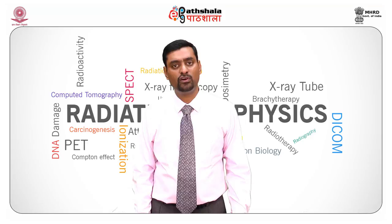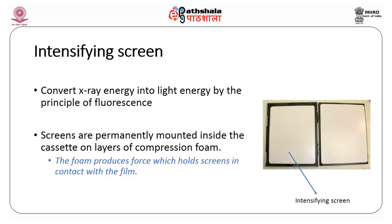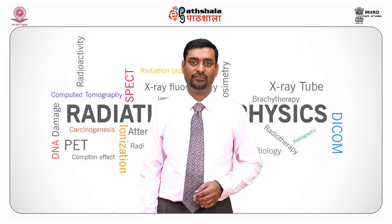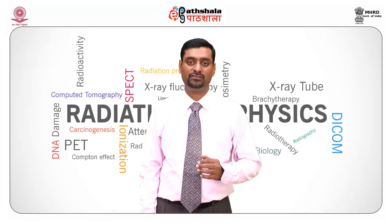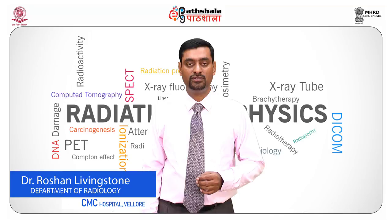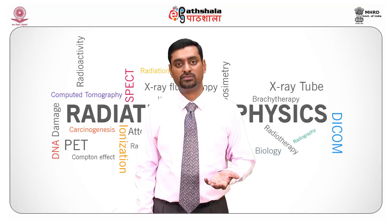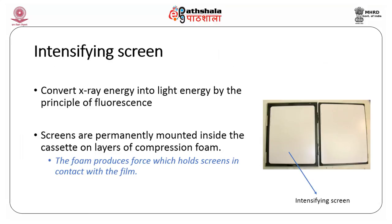Now moving on to the intensifying screen. The function of the intensifying screen is to convert X-ray energy into light energy by the principle of fluorescence. Fluorescence is when certain materials, when hit by X-rays or electromagnetic rays, produce light that stops emitting soon after the stimulus is removed. Using this fluorescent material it is possible to produce high quality images in a very short duration of time. Screens are permanently mounted inside the cassette on layers of compression foam, which produces force that holds the screens in contact with the film.